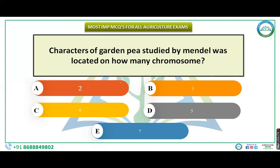Mendel studied seven characters of Pisum sativum. All the genes controlling these seven characters were located on different chromosomes. The chromosome number of Pisum sativum is 2n = 14. These seven characters were located on four chromosomes — chromosomes numbered 1, 3, 5, and 7.